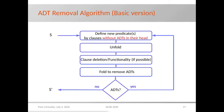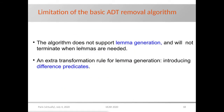Generalizing from our example, here is a sketch of a basic transformation algorithm for removing ADTs. We start from a set S of clauses, define new predicates by clauses without ADTs in their head, then unfold, apply clause deletion and functionality if possible, and finally fold to remove ADTs. We iterate this process until no ADTs are left. A limitation of this basic ADT removal algorithm is that it does not support lemma generation and will not terminate when lemmas are indeed required.